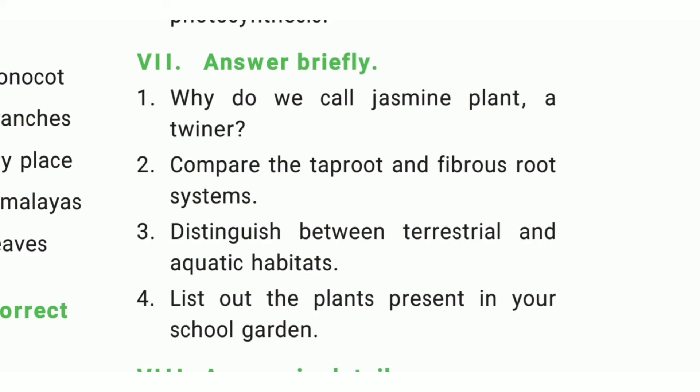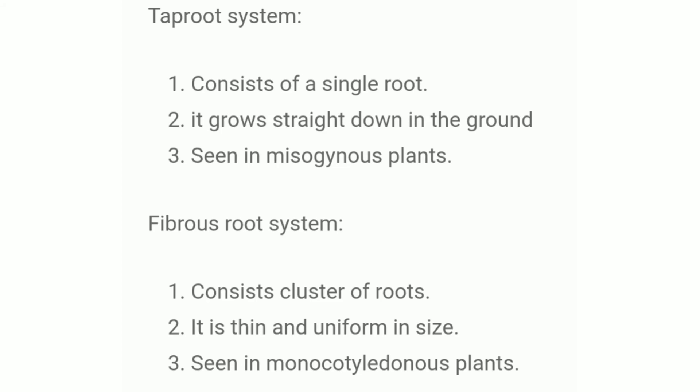Second question: Compare the tap root and fibrous root system. The answer is: tap root system consists of a single root that grows straight down into the ground, seen in dicotyledonous plants. Fibrous root system consists of a cluster of roots that are thin and uniform in size, seen in monocotyledonous plants.